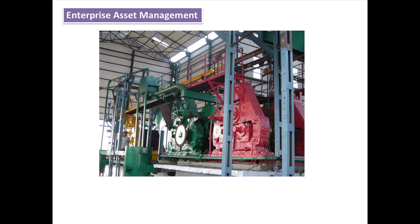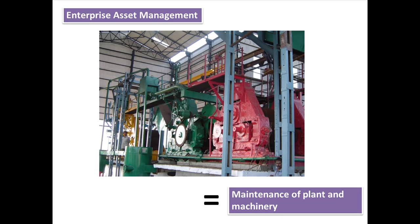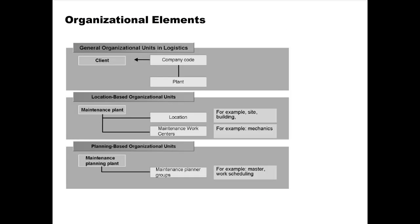Asset management, as already pointed out, is plant maintenance. A plant need not just be a single machine — it can be a huge, complex, large machine within which there are lots of smaller machines that are part of the larger machine. Enterprise asset management is simply the maintenance of plant and machinery.